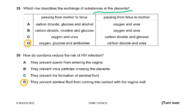Question 35: which row describes the exchange of substances in the placenta? Oxygen, glucose, and antibodies pass from the mother to the fetus. Passing from the fetus to the mother: carbon dioxide and urea.